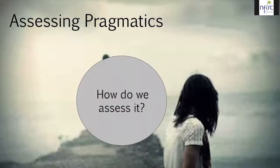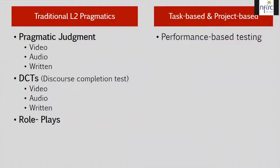So how do we assess whatever it is we want to assess? Traditionally in L2 pragmatics, the way people look at whether someone understands or can use pragmatics has been through pragmatic judgment and DCTs — Discourse Completion Tests — as well as role plays. Pragmatic judgments and DCTs have been used mainly to assess pragmatic knowledge, while role plays have been used to see whether students have the ability to apply certain pragmatic features. More current methodologies like task-based or project-based language teaching have been looking more at performance-based testing.